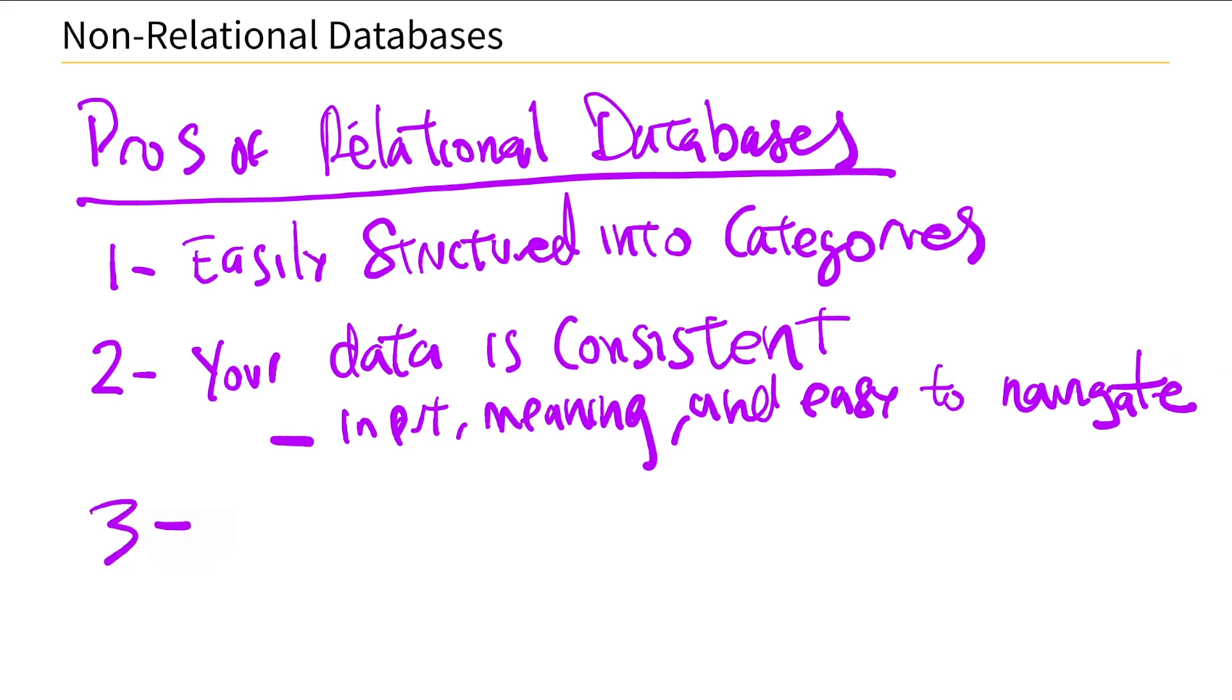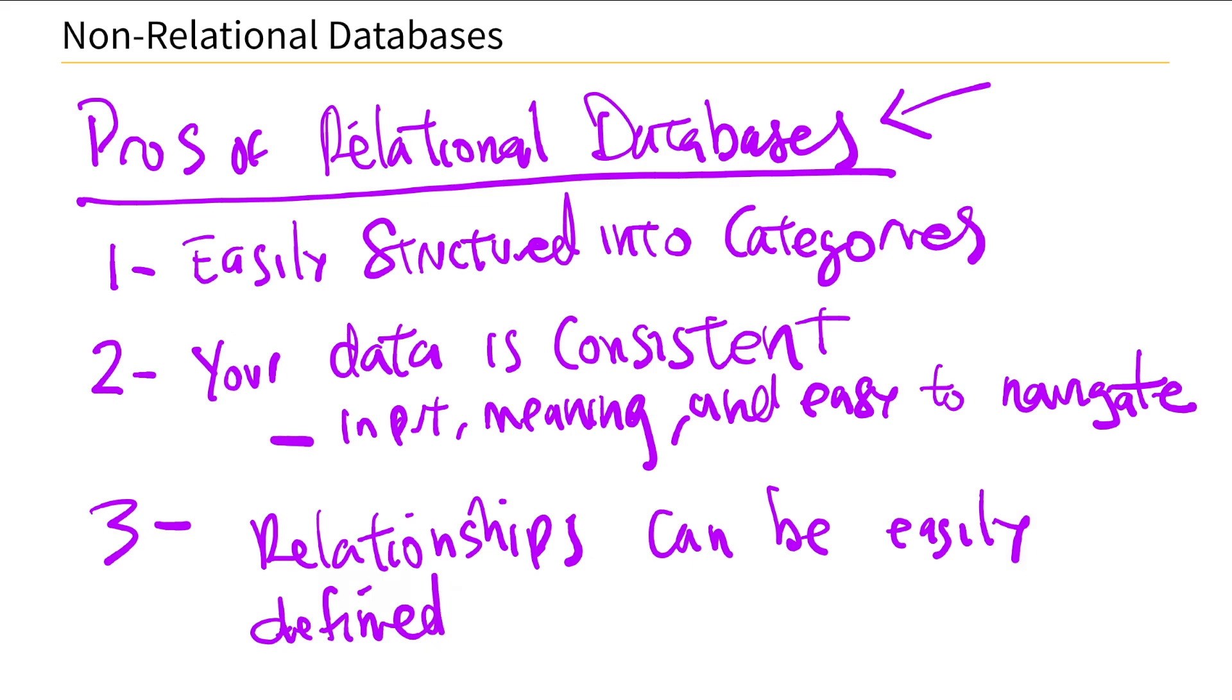And number three would be relationships. So we're talking about these relationships, and they can easily be defined between data points. So then you would use a relational database. Relationships can be easily defined. So I think that's pretty much why you would want to use a relational database or at least the pros of using a relational database.